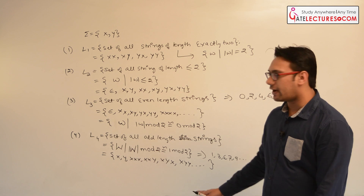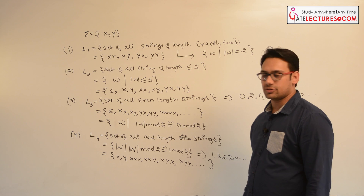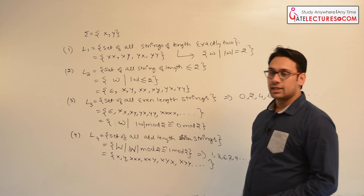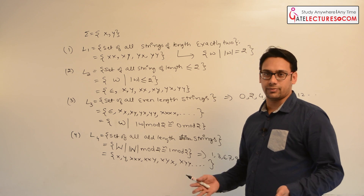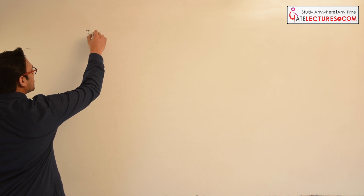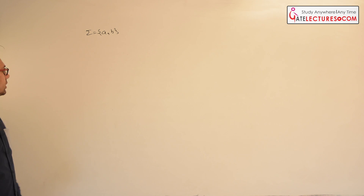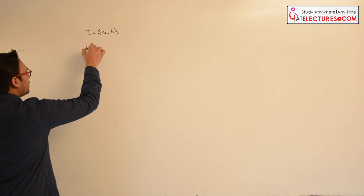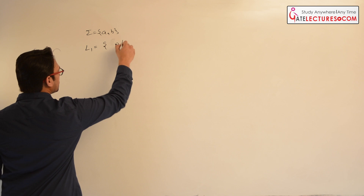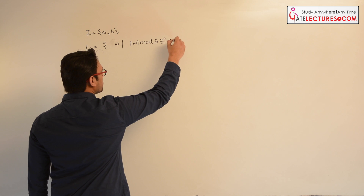Now let us take a few more examples of languages — approximately 10 to 15 examples — so by the end it will be clear what languages are and how we define them mathematically. Let us say we have sigma equal to {a, b}. Language L1 is defined as {w | length of w mod 3 ≡ 0 mod 3}.